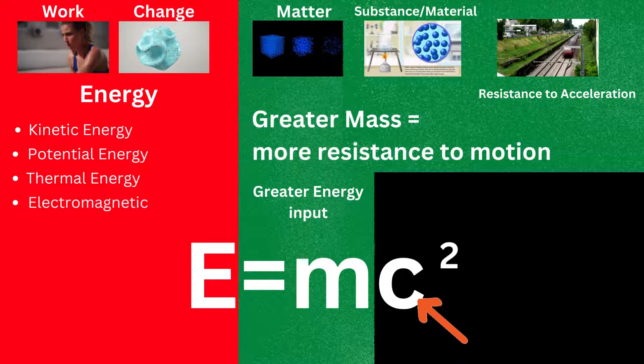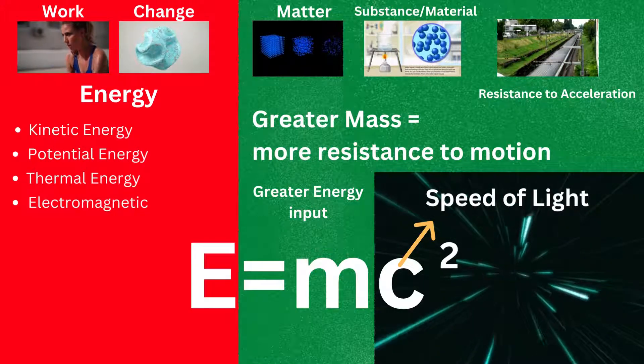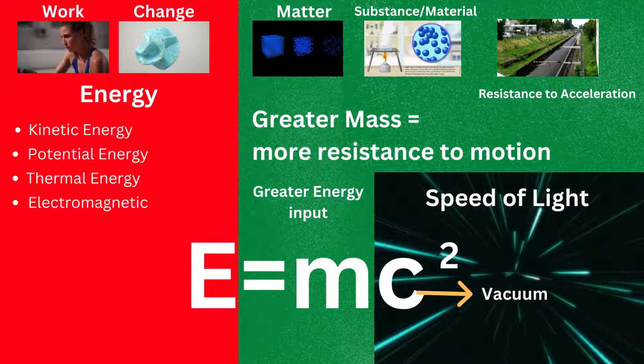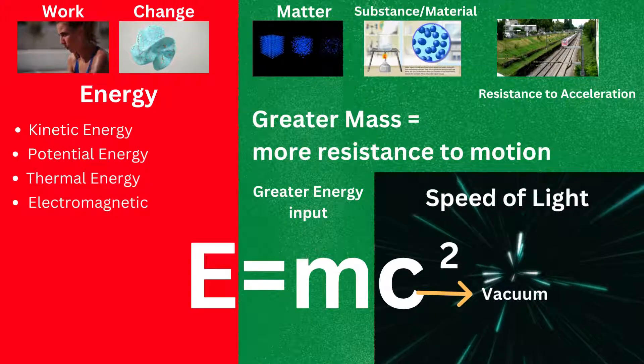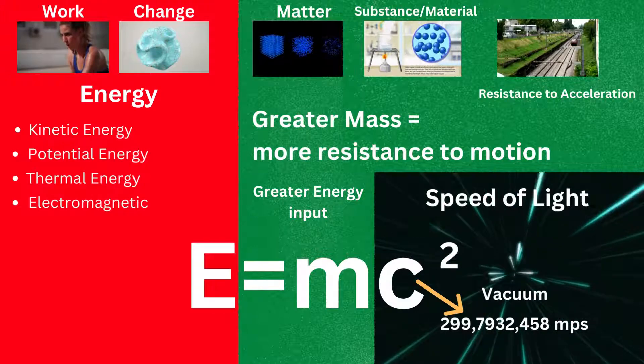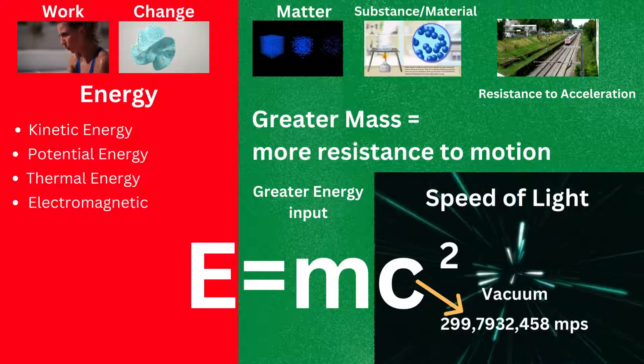C is a fundamental physical constant in physics which represents the speed of light. In a vacuum, which is a space entirely devoid of matter, light moves at a constant speed of around 299,792,458 meters per second.